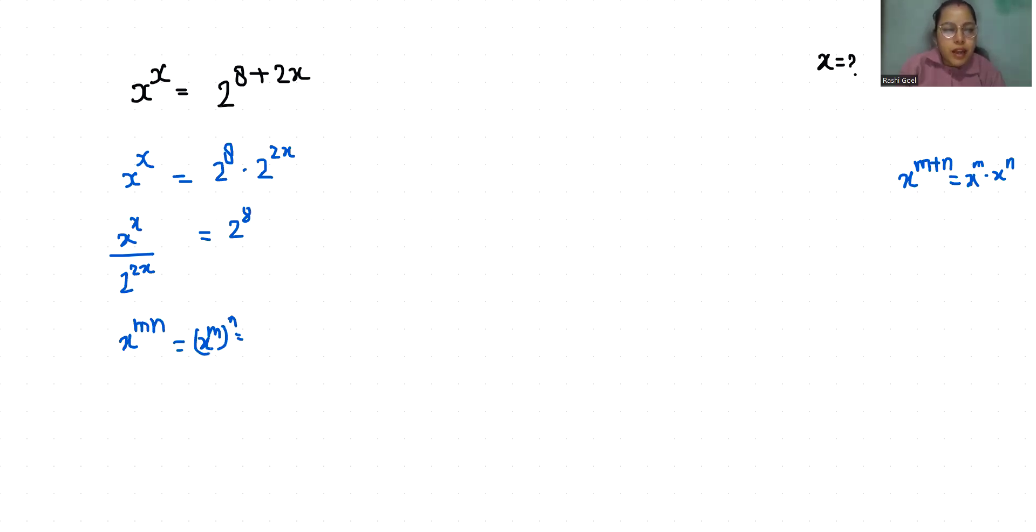So x power x by 2 power 2 whole power x equals 2 power 8. So x power x by 4 power x equals 2 power 8. So x by 4 whole power x equals 2 power 8.